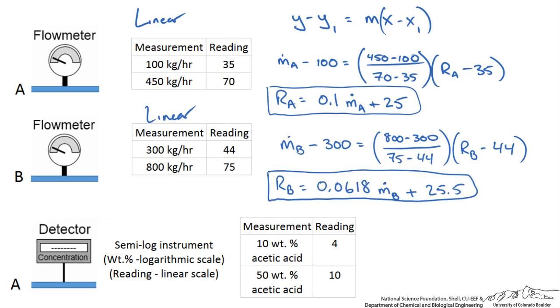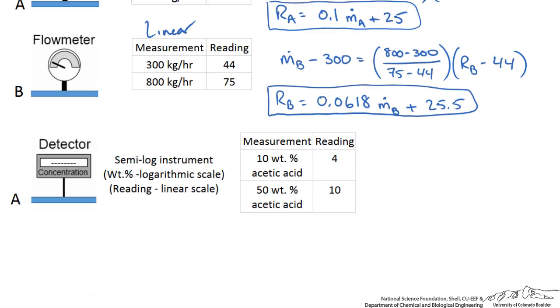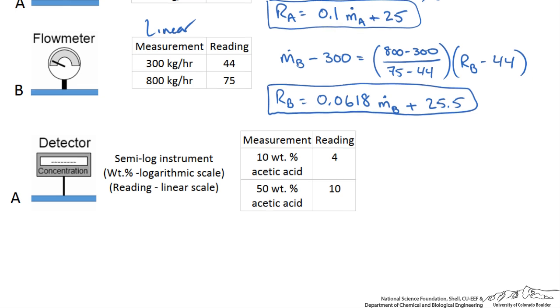Now we repeat the same procedure for the detector, but it is important that for the semi-log relationship we use the log of the value as our y axis point. So whereas before we had y minus y1, now we have natural log of our composition x, where x is the weight percent.